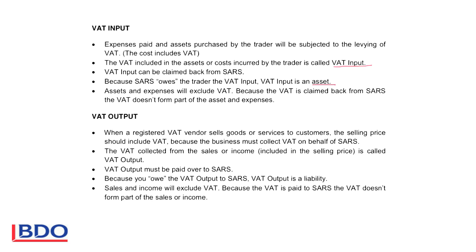VAT output is when you are a registered VAT vendor — you will sell goods or you will render services to customers. When you sell these goods, the selling price must include VAT, because the business must collect VAT on behalf of SARS. If you render a service, you will also include VAT in the money that you receive. VAT collected on sales or on income is included in the selling price and is called VAT output.